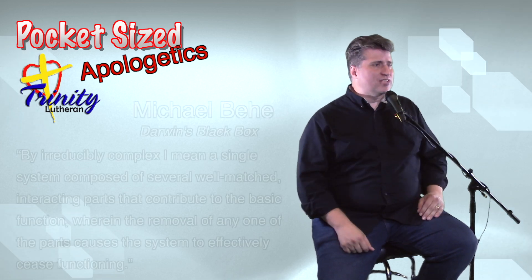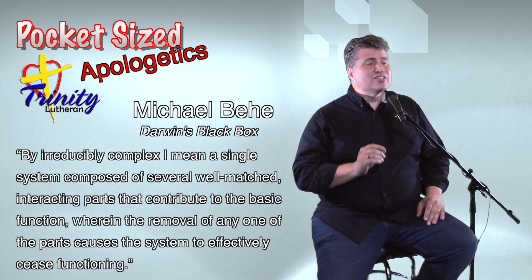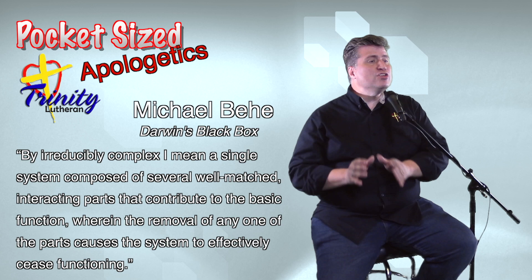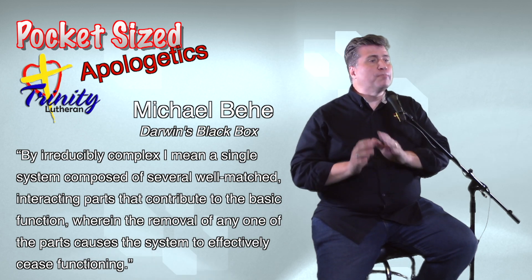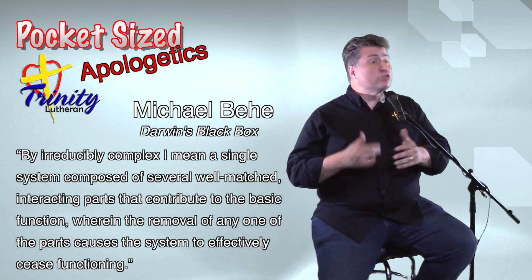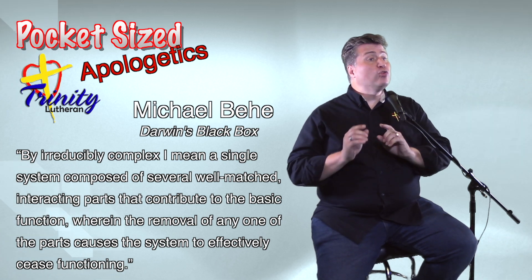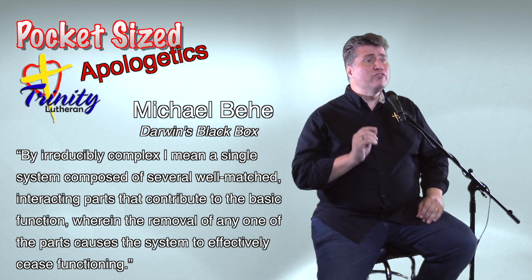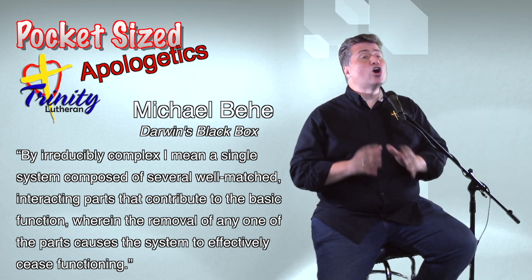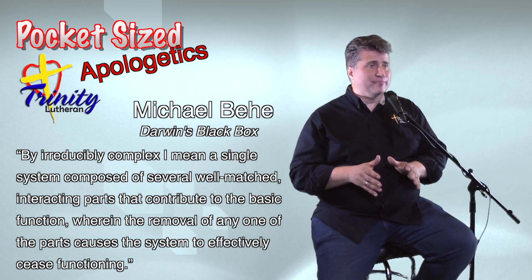In his book Darwin's Black Box, Michael Behe says this: "By irreducibly complex, I mean a single system composed of several well-matched, interacting parts that contribute to the basic function, wherein the removal of any one of the parts causes the system to effectively cease functioning."